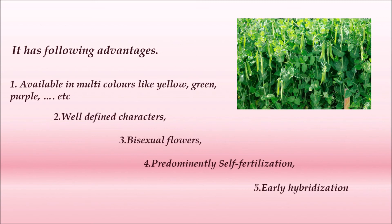Being available in multi colors like yellow, green, and purple means many variations are observed. Each character Mendel wanted to observe was clearly defined in the pea plant. It is bisexual, showing both male and female characters, predominantly undergoes self-fertilization, and has an early hybridization process. These advantages made Mendel choose the pea plant as his experimental material.